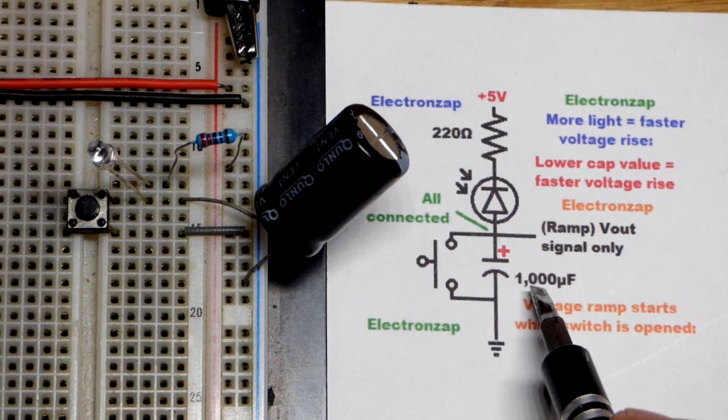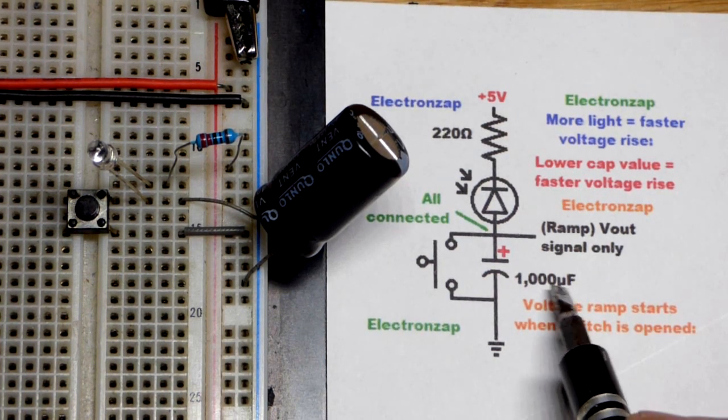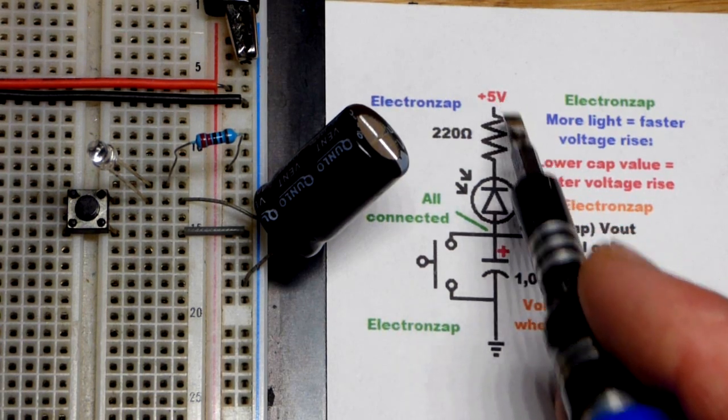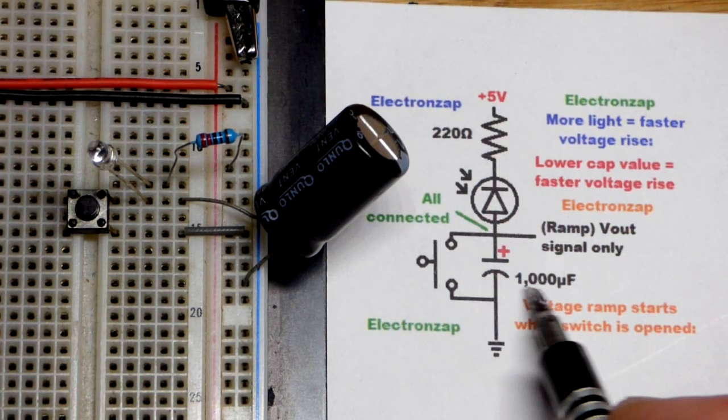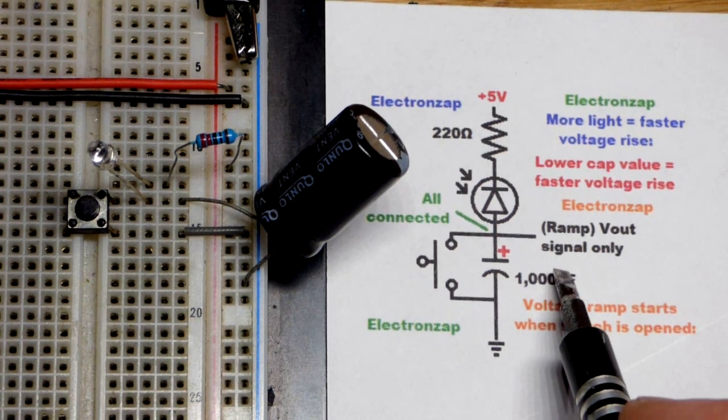So if we wanted a really rapid ramp we could use a lower value capacitor. And still the ramp would go up faster with bright light. It would take longer with lower light. But compared to this capacitor it would go faster in general. Hopefully that makes sense.